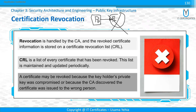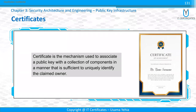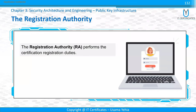The two main reasons a certificate is revoked are expiration or compromise. A certificate is a mechanism to associate a public key with a collection of components, and these components and the public key are signed with the private key of the CA. The Registration Authority is responsible for performing the certification registration duties — verifying identity before the CA issues a certificate.